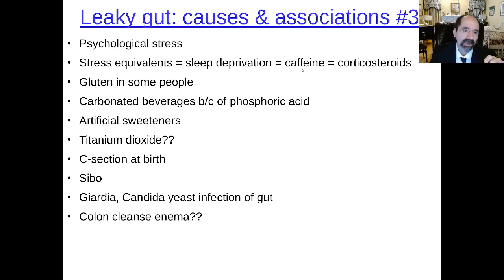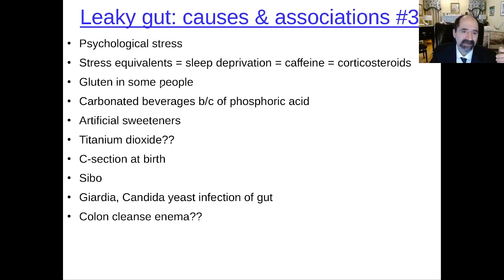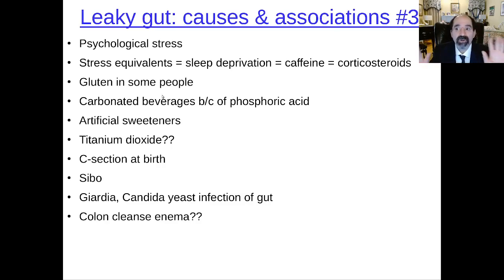Corticosteroids — people are sometimes taking those. Gluten in some people can be associated with increased risk of leaky gut — you might want to discontinue that, though not necessarily. One thing to remember about gluten foods is the more processed they are, the less healthy they are. Carbonated beverages, because of the phosphoric acid. Artificial sweeteners — you want to avoid all that stuff. You don't get ahead by trying to trick Mother Nature. What you do is try to do what Mother Nature wants.